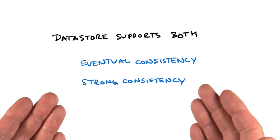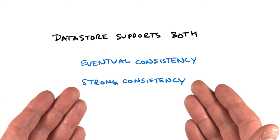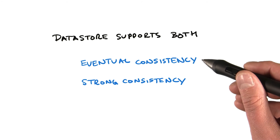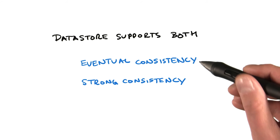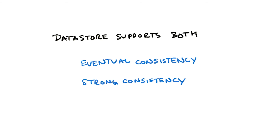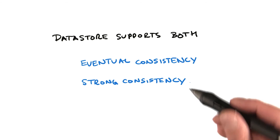Luckily, Datastore supports both of these models. You can use the default fast and scalable eventual consistency when required, and when you need to ensure strong consistency, that is also supported.